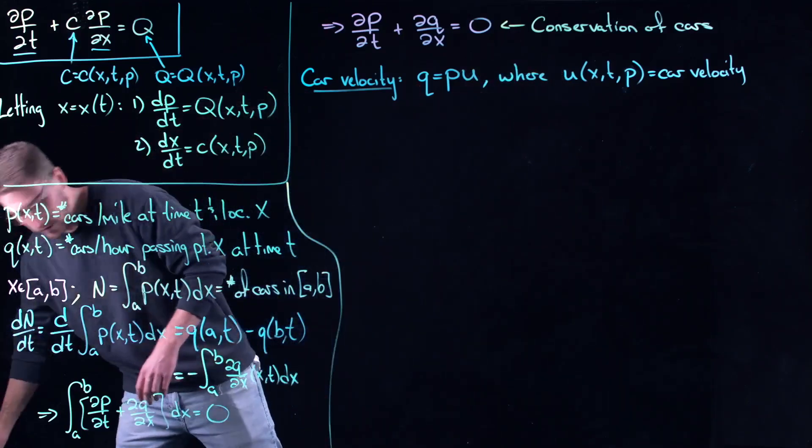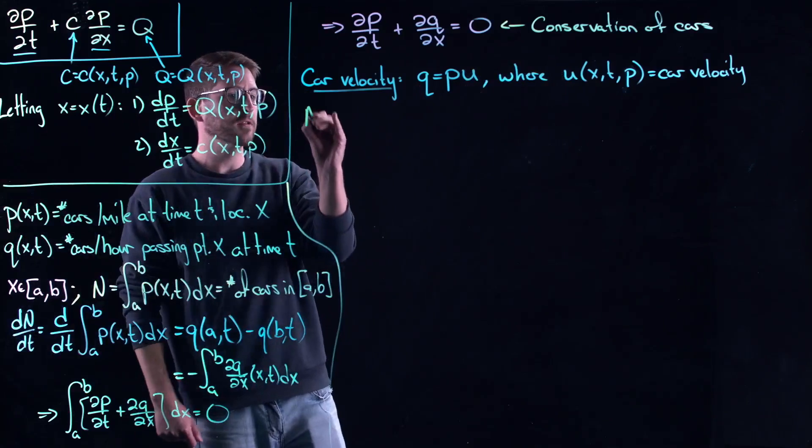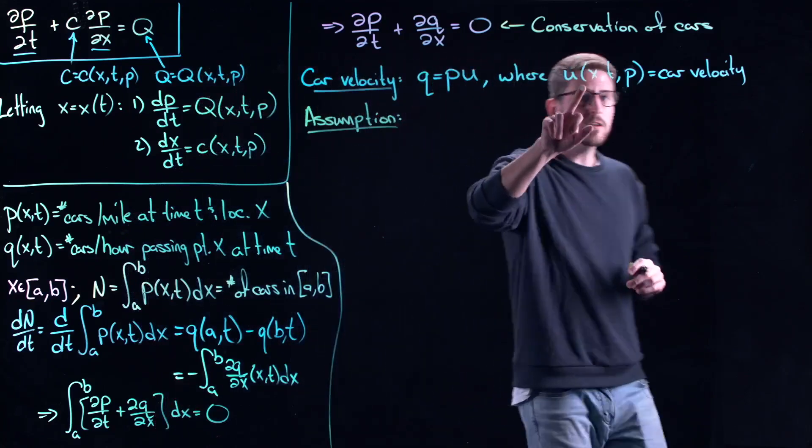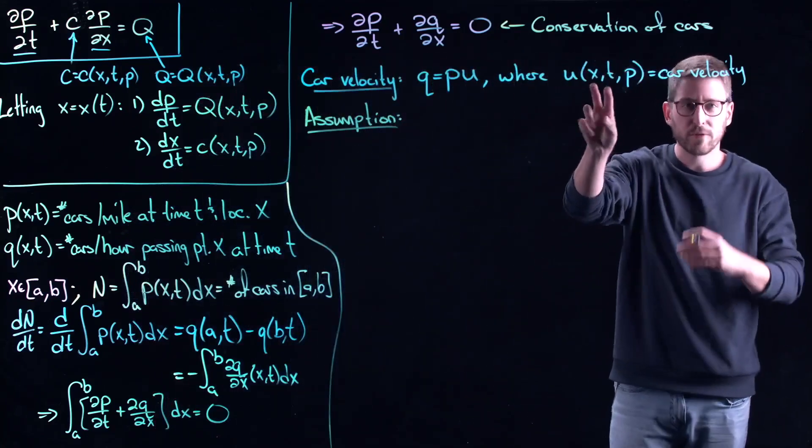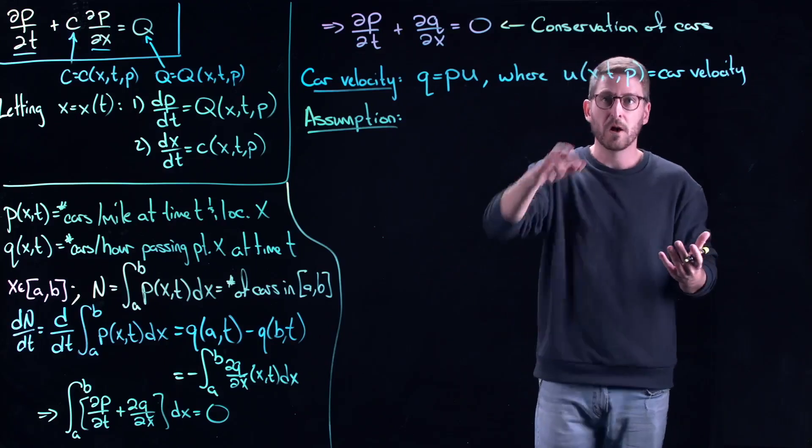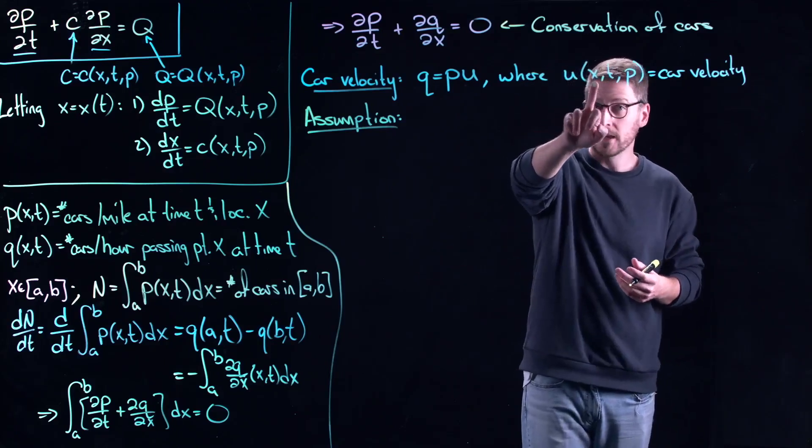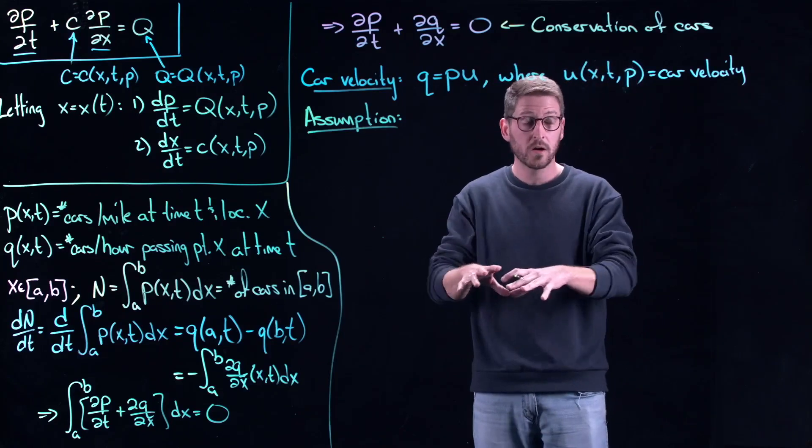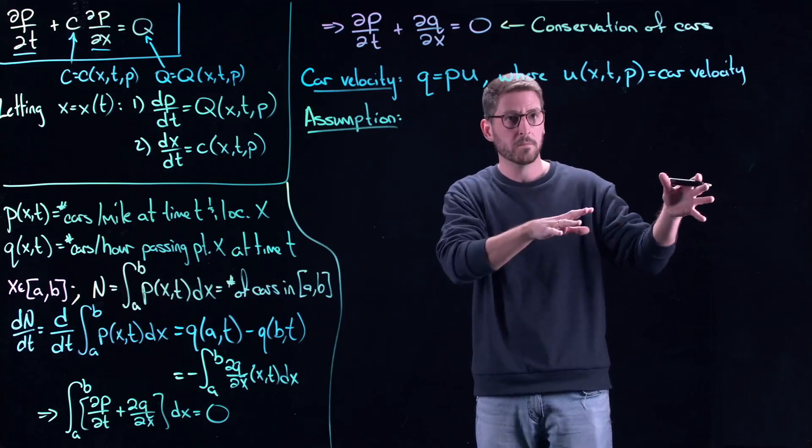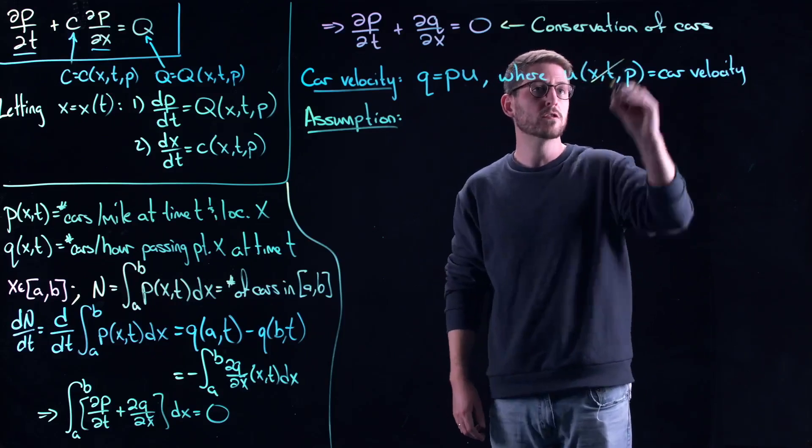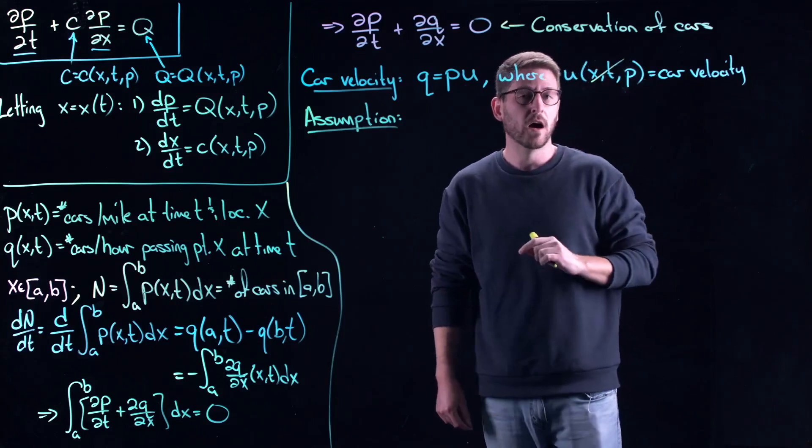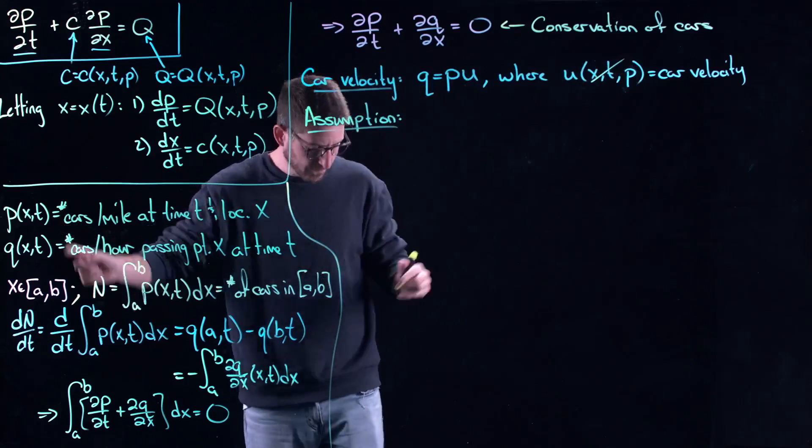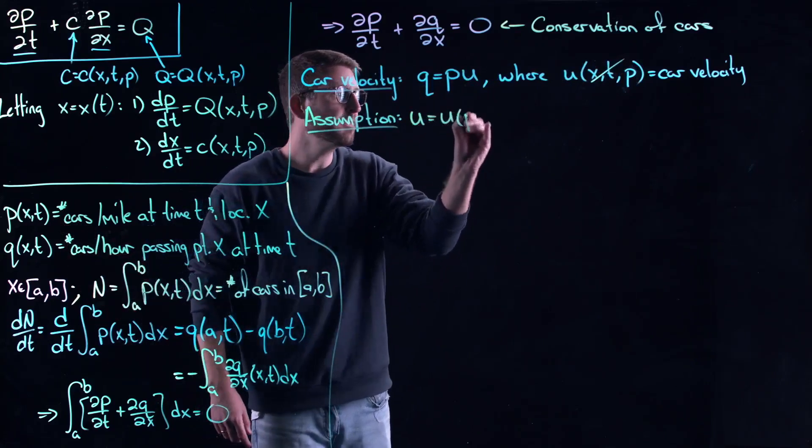Now here's what the assumption is going to be. I'm going to make a simplifying assumption. My car velocity does not depend on space and time. For example, there's no potholes. Potholes would be an imperfection in space, and they typically slow cars down. The velocity near a pothole is probably much lower than a velocity away from a pothole. So what we're going to do is assume that velocity does not depend on space or time. It only depends on the number of cars that are on the road, essentially.